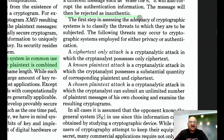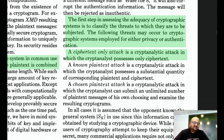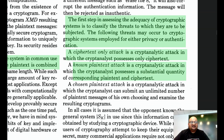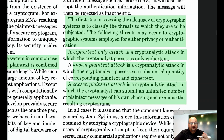Let's look at the types of attacks one could mount on a cryptosystem in order to break it, in increasing order of strength. These are: a ciphertext-only attack, where the attacker only knows the ciphertext; a known plaintext attack, in which an attacker possesses a number of plaintext and ciphertext pairs; and the strongest one, a chosen plaintext attack, in which an attacker can craft plaintext messages and then see what the corresponding ciphertext for them is.